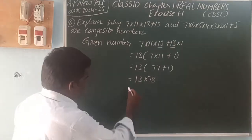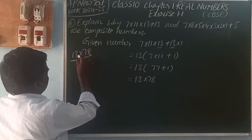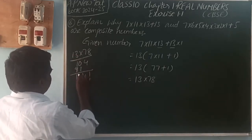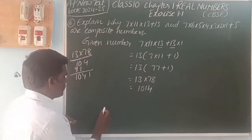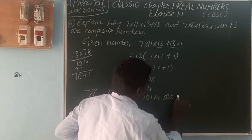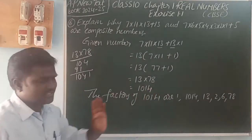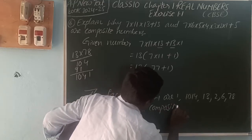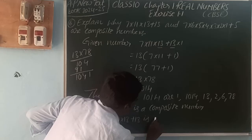So for this number, 13×78 equals 1014. The factors of 1014 are 1, 2, 6, 13, 78, 1014, among others. So therefore, 1014 is a composite number. That means 7×11×13 + 13 is a composite number.